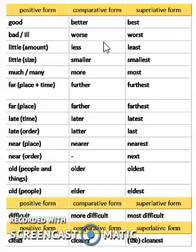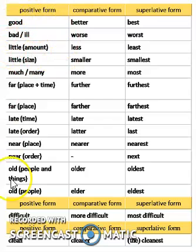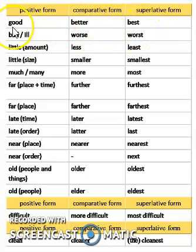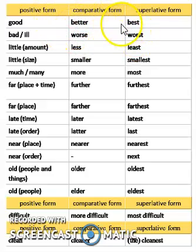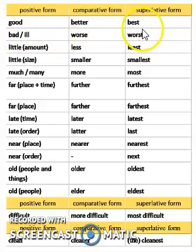Now I am going to tell you about some exceptions. For 'good' — I told you about this before and now we are discussing it in detail. Good, better, best. You see, for 'good' we are not adding EST or ER. It is not 'gooder' or 'goodest' — it will be good, better, best.